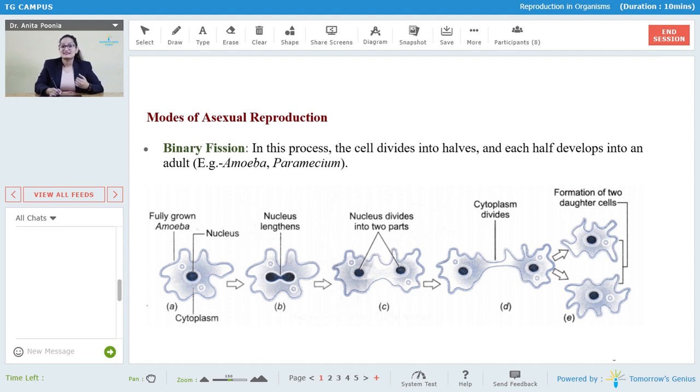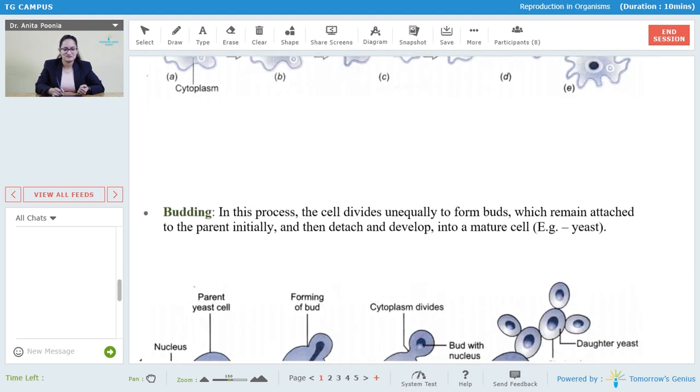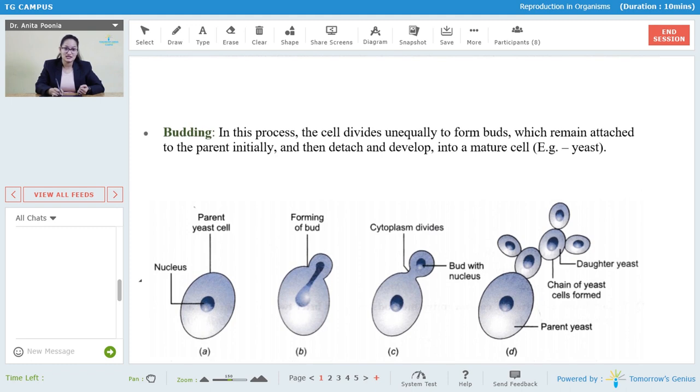Let us see the second example of asexual reproduction or second kind of asexual reproduction. The second kind of asexual reproduction is budding. Budding is quite popular in hydra and yeast. Yeast is a fungi as you all know. You know that yeast is generally used in making cakes and breads to increase the texture of that food. So what is budding? In this process the cell divides unequally from the bud to form the bud which remains attached to the parent